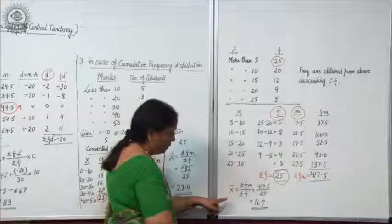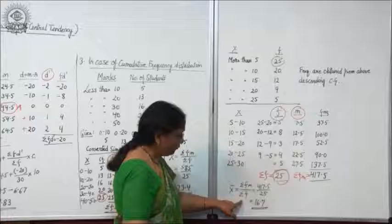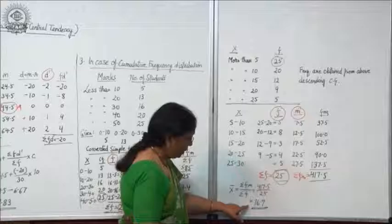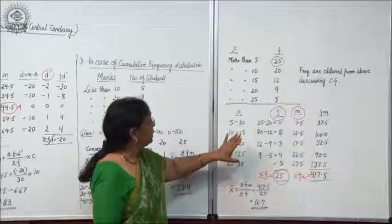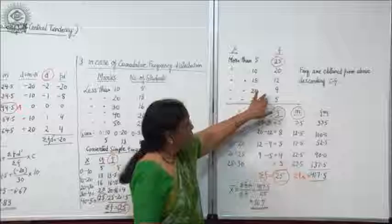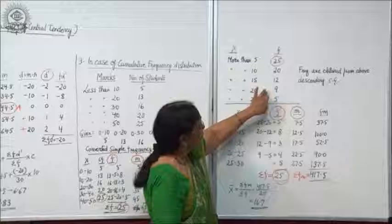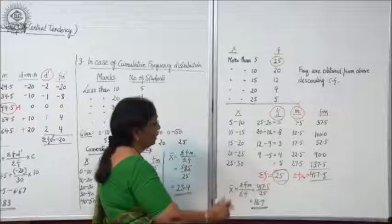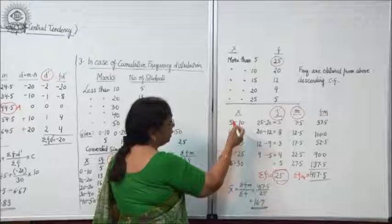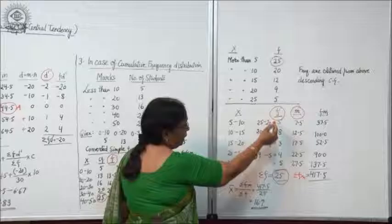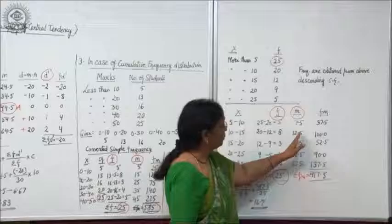Multiply the f column with the m column to get fm, add up all these — Σfm equals 417.5. Now for arithmetic mean, X̄ = Σfm / Σf. The value is 417.5 and Σf is 25. So in the case of more than series, all frequencies are given in descending cumulative form. Take the class interval — more than 5 is given, next is 10, so first class interval is 5 to 10. Calculate the simple frequency, take out the midpoint, calculate fm, put the values, and get the answer.